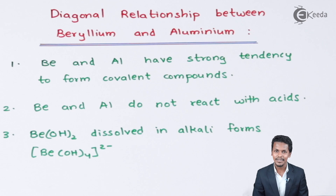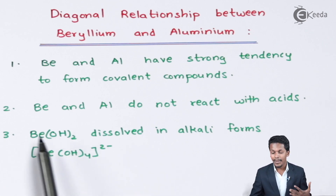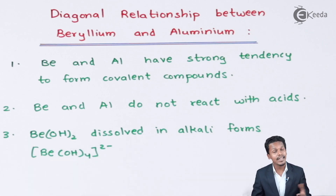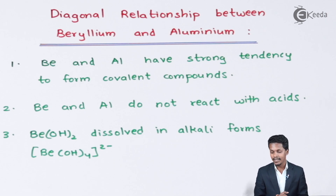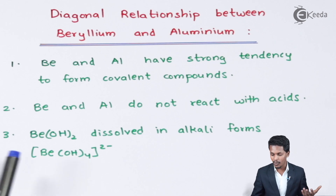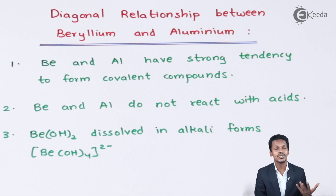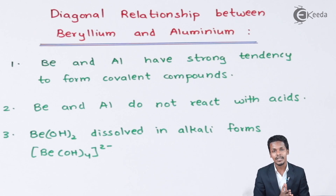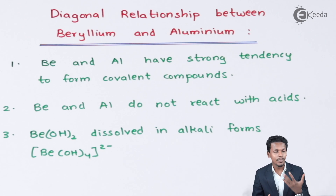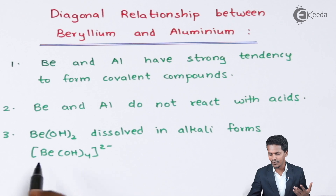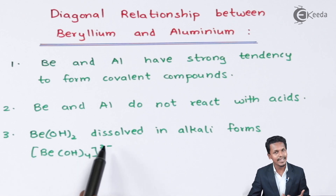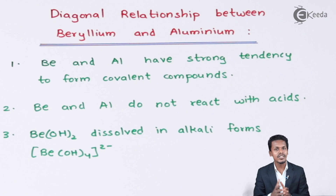The third point: when beryllium hydroxide is dissolved in an alkaline solution, it forms the beryllate ion, which carries a 2− charge and forms a complex. Similarly, when aluminium hydroxide is dissolved in alkali, it forms the aluminate ion with the formula [Al(OH)₄]⁻. Both beryllium and aluminium hydroxides thus behave in a comparable way when dissolved in alkaline solutions.